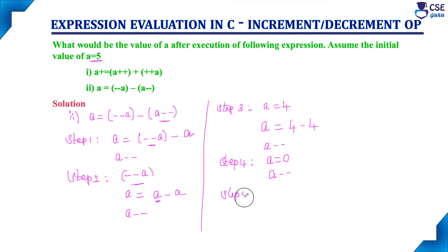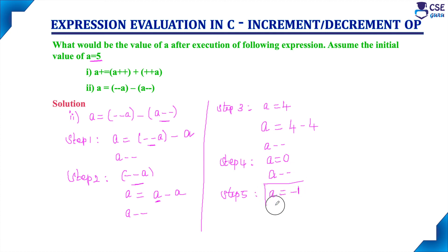Next, we decrement the A value from the pending post-decrement. After decrementing, A value becomes minus 1. So finally, the variable value is minus 1 after executing this statement. With these two examples, the working of the increment and decrement operators is now clear.